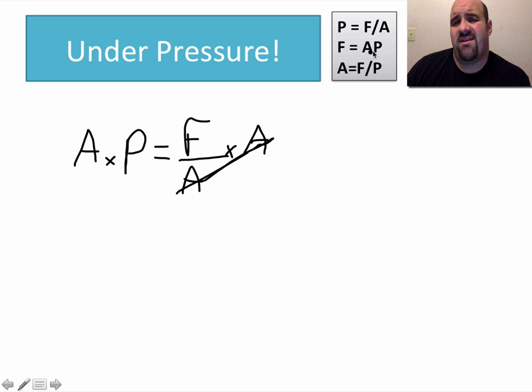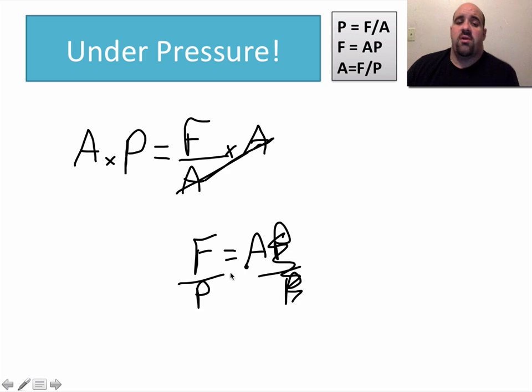And if we wanted to solve this for area, if we wanted to get A all by itself, force equals area times pressure. You've got to get rid of the P. So divide by P on both sides and those cancel. Area equals force over pressure. So those are the three formulas we're using.